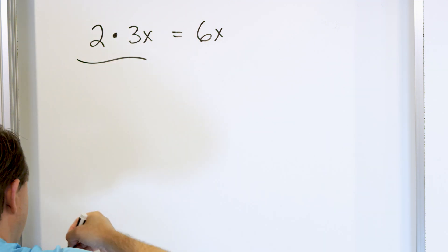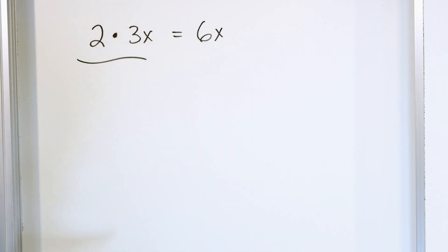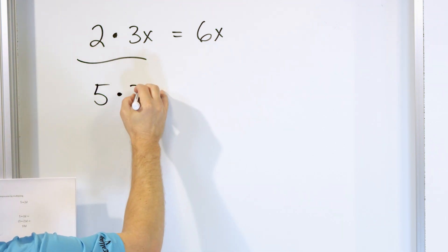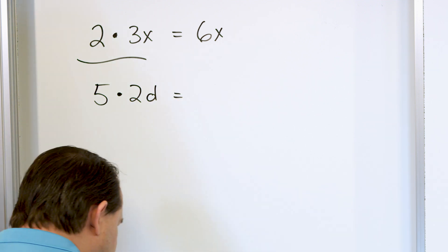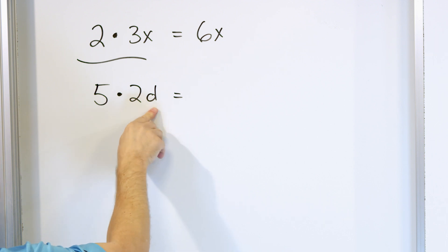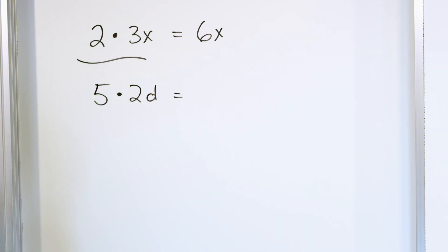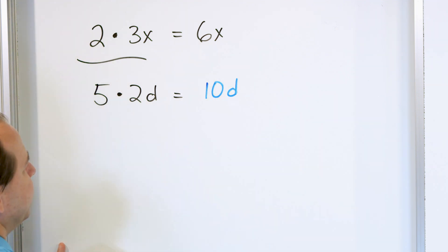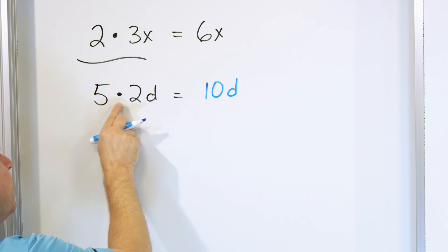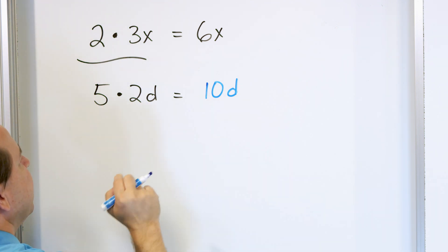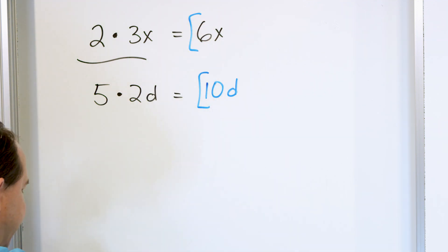Let's crank through a few more and you'll see how easy this becomes. Let's say we have 5 times 2d. This is like two dinosaurs. I have two dinosaurs in my possession, but then I multiply that amount by five, so I'll actually have a total of 10 dinosaurs, which is 10d. In terms of math, you multiply the numbers, and the letter just comes along for the ride. So 10d is the final answer.